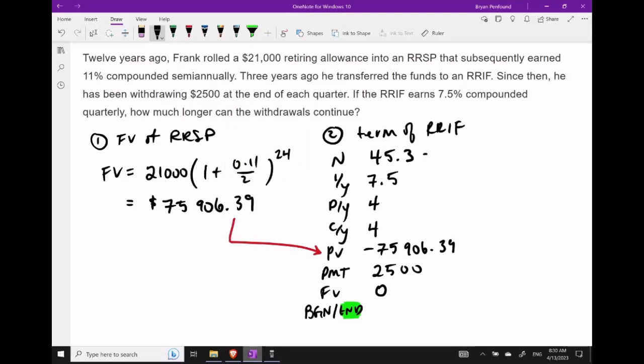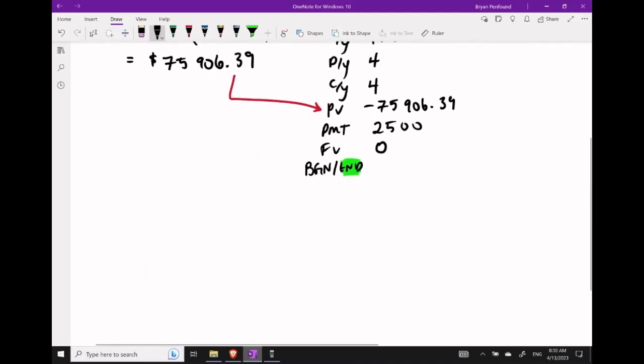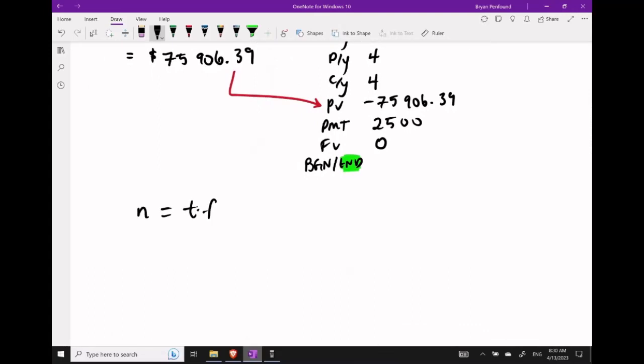To finish this question, we need to round up our value for n to 46 equal-sized payments. If we've made 46 payments, how long is the term of this RRIF? We know n equals 46, and we're solving for t. The frequency of payments is 4, so taking 46 divided by 4 gives us t equals 11.5 years.